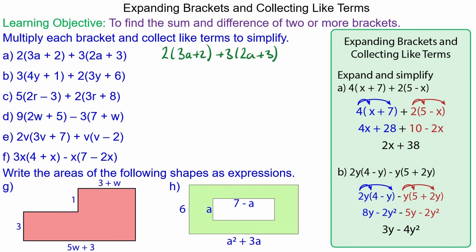In this lesson we're going to find the sum and difference of two or more brackets. We begin with question 8a. We multiply the 2 by the 3a to make 6a, the 2 by the 2 to make 4, added to 3 times 2a which is 6a and 3 times 3 which is 9. Now we can collect the like terms. So we have 12a and the 4 add the 9 is 13. So the answer is 12a add 13.